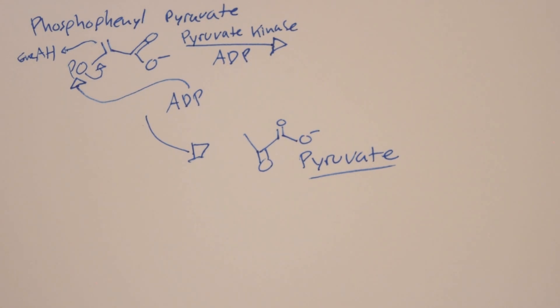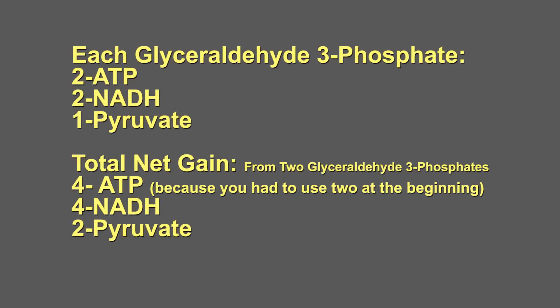So from each glyceraldehyde 3-phosphate, we have gained 2 ATP, 2 NADH, and a pyruvate. Because there were 2 of them, we have 4 ATP, 4 NADH, and 2 pyruvate for a net gain in glycolysis. Thanks for watching. I hope that this was clear enough to understand and helps you out in your studies.